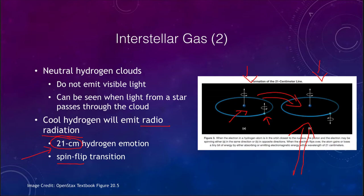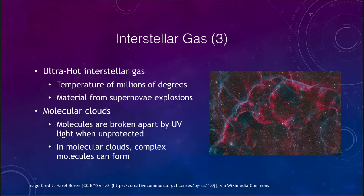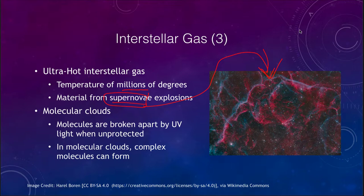Another type of interstellar gas is very hot gas — temperatures of millions of degrees. We see an example here of a supernova remnant: those outer parts of a star being expelled out into space. These are also part of the interstellar medium. They tend to give off X-rays because of their very high temperatures and very high energy. This is also where a lot of enriched material comes from, after it has gone through a star's life and evolved from lighter elements like hydrogen and helium into heavier elements.